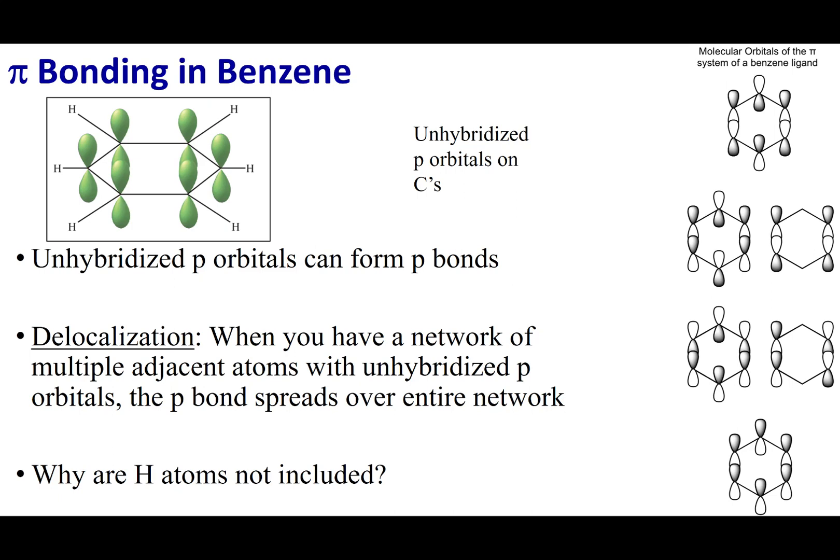Now, the question becomes what p orbital is overlapping with what p orbital, if we were to just stick with the hybridization model. But it turns out what we can use is MO theory.